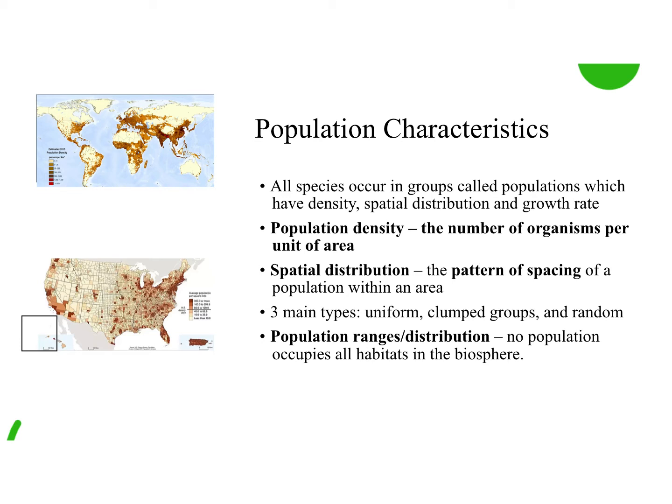Another characteristic ecologists look at is spatial distribution — that's the spacing between organisms in a population. Are they uniform? Think more of like vegetation or plants — maybe every two feet you have something. Do they come together in groups, or is it just random where there's no pattern?